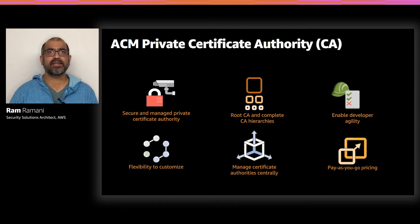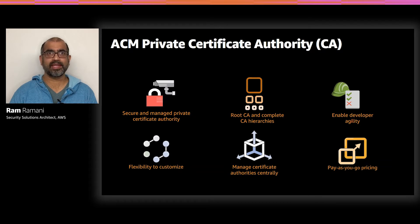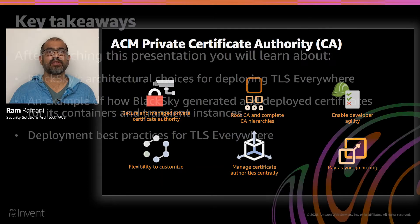ACM and Private CA can be used separately. When used together, customers can use ACM to request private certificates from a CA within Private CA, and then apply those certificates to AWS resources, or in the case of EC2 instances, export these private certificates and install them on EC2 instances. These exported certificates still benefit from managed renewal as ACM renews the certificate and then provides a CloudWatch event to notify the owner, or you can kick off automation to rotate the certificate at the endpoint. ACM Private CA also offers many custom templates, such as code signing or CSP. And just like all other AWS services, ACM Private CA is completely API-driven, and we offer pay-as-you-go pricing.